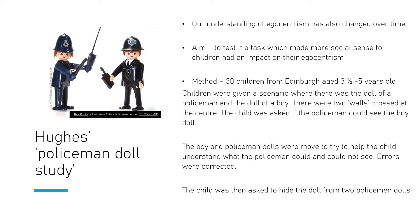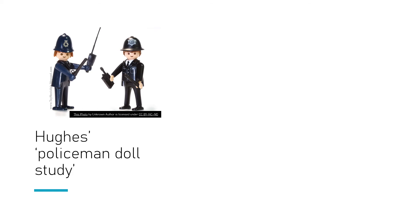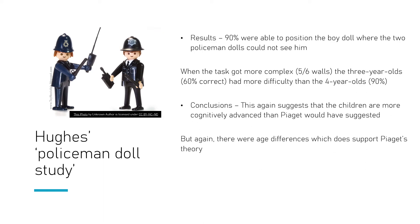The aim was to test whether a task that made more social sense to children affected their apparent egocentrism. Thirty children from Edinburgh, aged between three-and-a-half and five years old, were given the task. A child was asked whether the policeman could see the boy doll, and the game was to get the boy to hide from the policeman — the policeman couldn't see through walls, but could see the boy if he was on the visible side. The boy and policeman dolls were moved to help the child understand what the policeman could or could not see. When children made errors, the researcher pointed this out. The key task was for the child to hide the doll from two policemen.